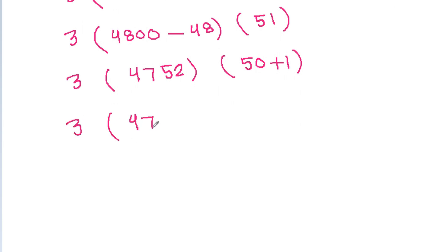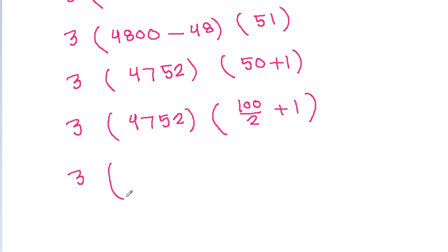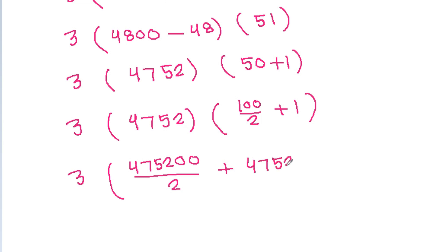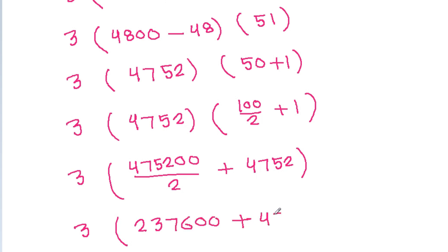It is 3 times 4752 times 51. Now 51 is 50 plus 1, and 50 is 100 divided by 2. So 4752 times 100 divided by 2 gives 475200 divided by 2, which is 237600. And 4752 times 1 will be 4752.